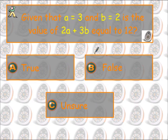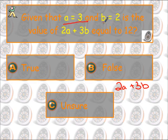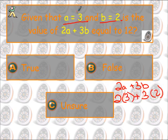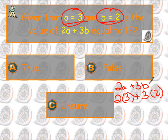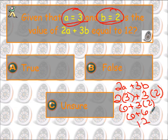Alright, let's look at this one. They're telling us we've got 2a plus 3b. We write down our original problem. They're telling us a equals 3, b equals 2. So wherever I see an a, I put a 3; wherever I see a b, I put a 2. So I'm putting 2 times 3 plus 3 times 2. Order of operations: 2 times 3 is 6, then 6 plus 3 times 2 — multiplication comes before addition — so 6 plus 6 is 12. They asked if it is equal to 12 — it is, so we are true.